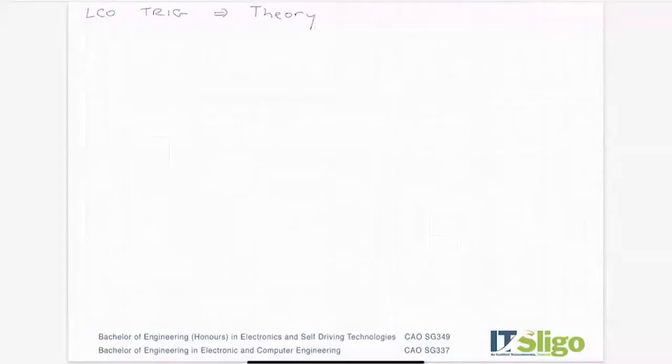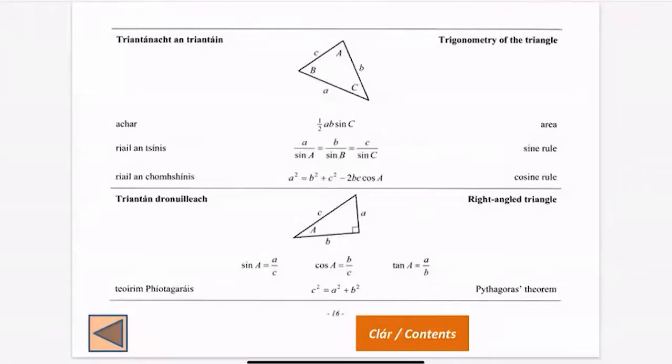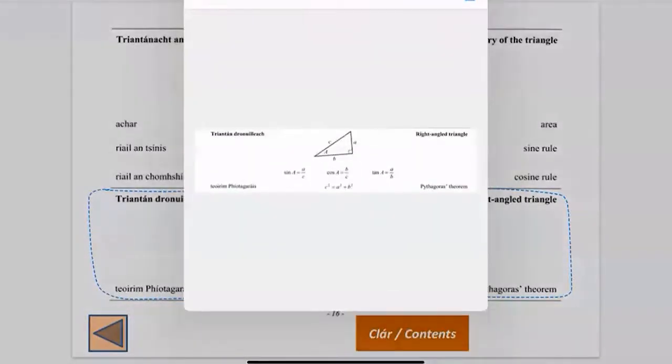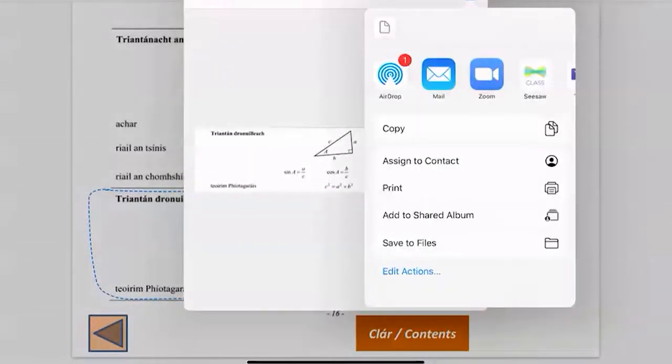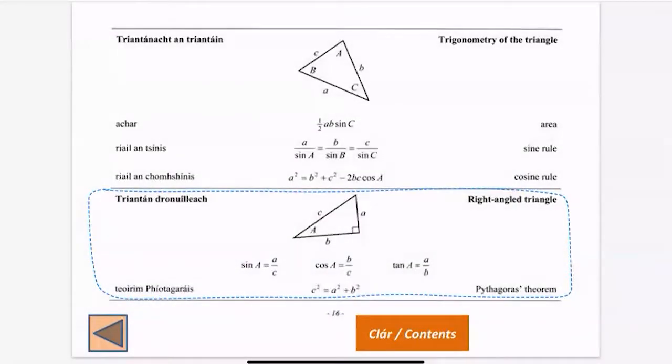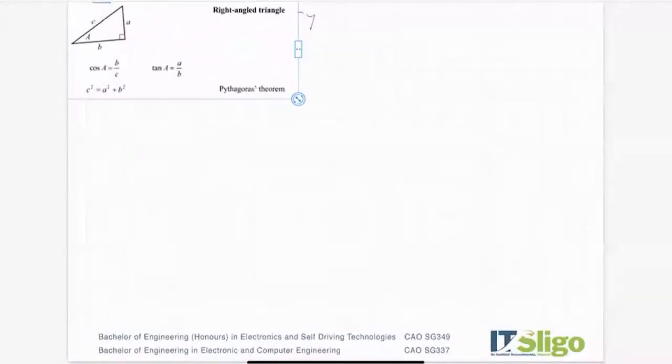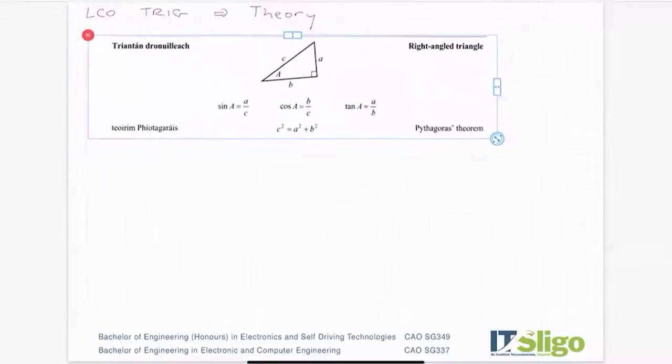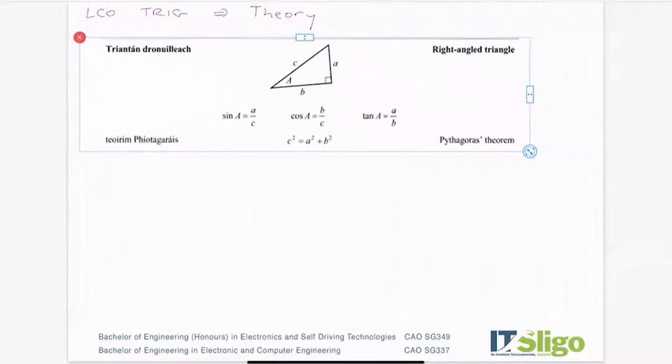Right, so when I think of Leaving Cert trig and the theory behind it, not surprisingly for anyone who knows me, you know I'm going to go to the log tables. So the first bit of theory that's very relevant is this little piece here, which is right angled trig. Very important. I'll go back for non-right angled in a minute, but let's go through this one first.